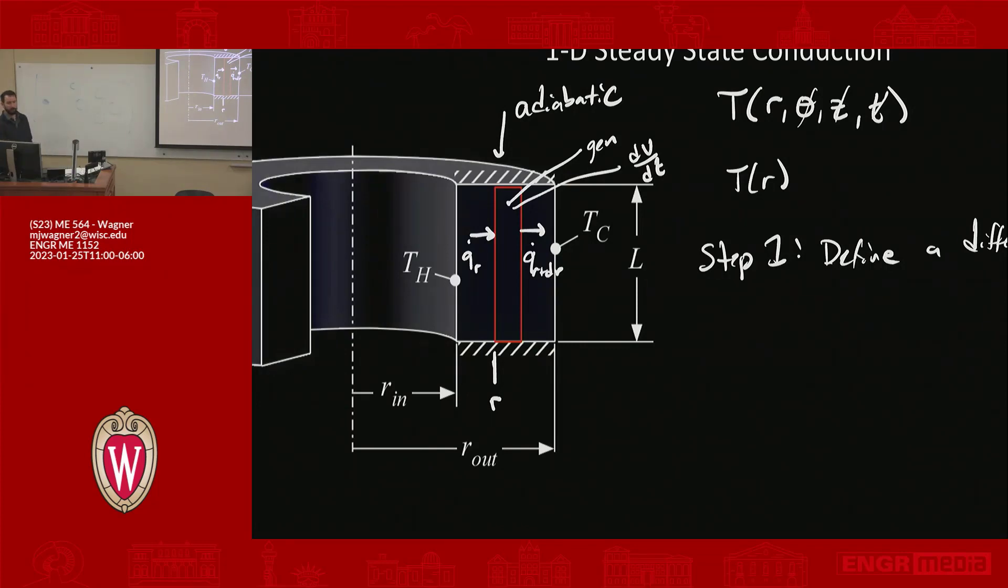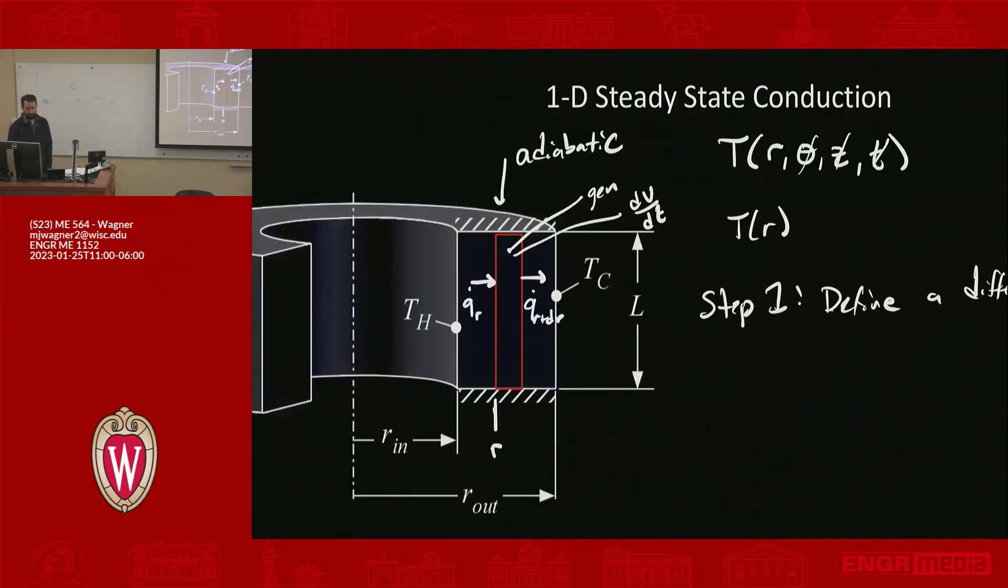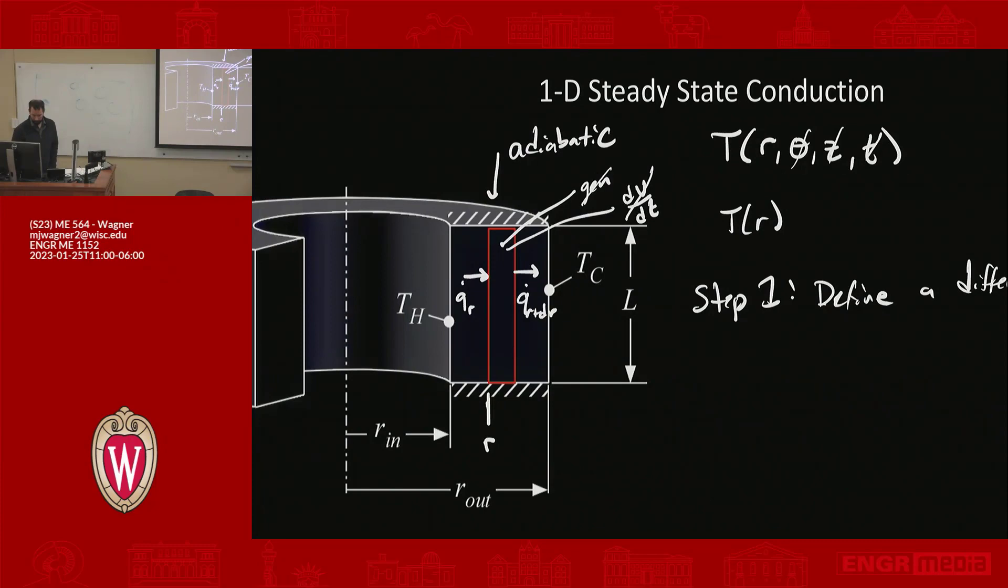But I've said it's steady state, 1D, and we'll just assume that there's no generation. We'll deal with that later. So both of these go away. So the only thing that's happening here is you have heat transfer in from the left and out from the right, and that's it. So it's a really simple problem. So we have our control volume.